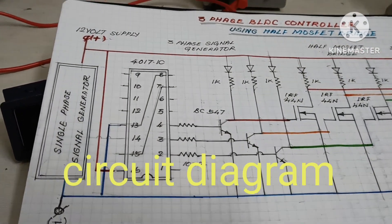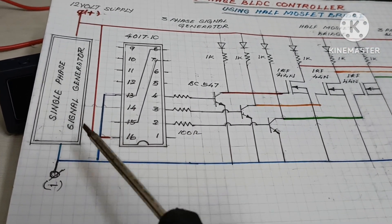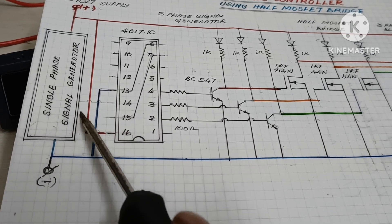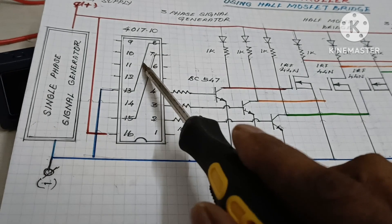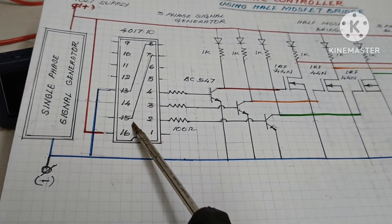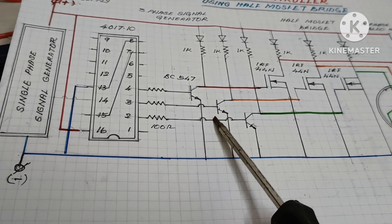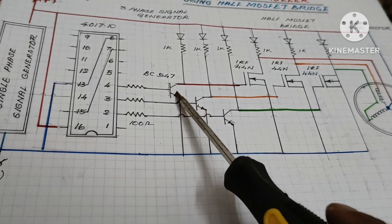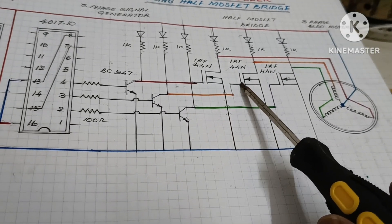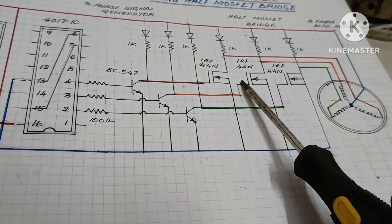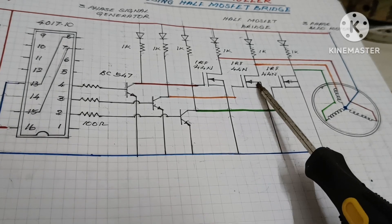Here is the circuit diagram. The output of the single phase signal generator is given to the 14th pin of the 4017 IC and it is connected to the three phase signal. The three phase signal is given to the transistor 547, which is used to drive the MOSFET. Here three MOSFETs are used, IRF44N MOSFET is used.